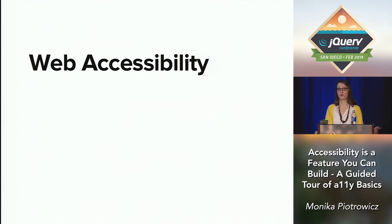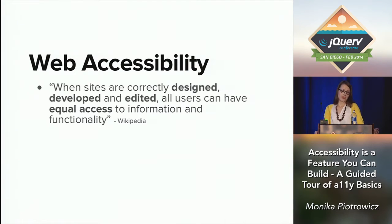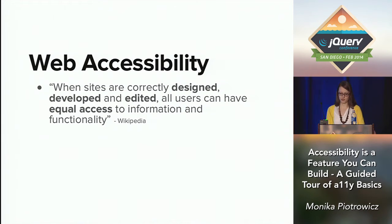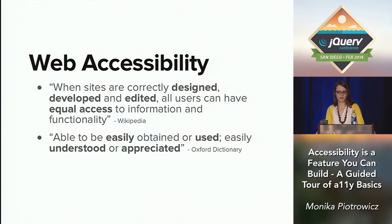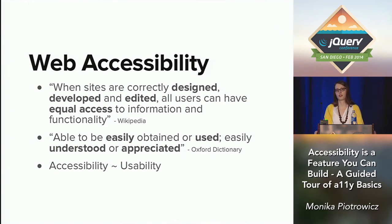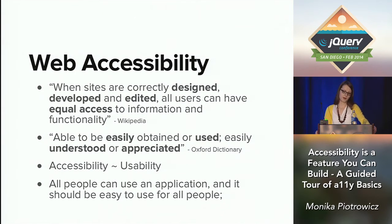I should probably mention what I mean by web accessibility. There are two definitions that I really like because each one underlines a different part of accessibility. Wikipedia says that when sites are correctly designed, developed and edited, all users can have equal access to information and functionality. I really like this because it shows that accessibility is a concern for the whole production team — it's as much a design and content question as it is a technical consideration. Something that's accessible is something that's able to be easily obtained or used, easily understood or appreciated. This reminds me of usability — that quality of an application that makes it effective, intuitive and maybe even fun to use. For me, accessibility just extends that concept of usability to a more inclusive audience.